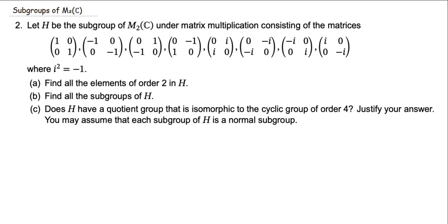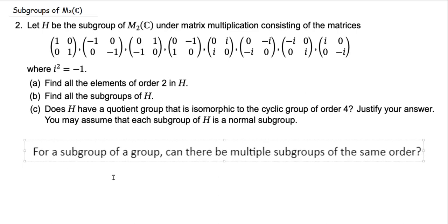Hello everybody. This is a special video I'm making because I got a question from a viewer — Tom from Nottingham, England. He wanted to know about the subgroups of the 2 by 2 matrices over the complex numbers, specifically subgroups of a subgroup. So H here is a subgroup of M2 of C consisting of these eight elements. And before we get into the specific questions Tom was looking at, he asked one more overarching question: for a subgroup of a group, can there be multiple subgroups of the same order? And that is going to be relevant here.